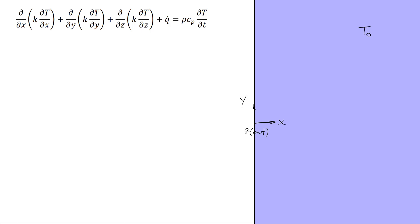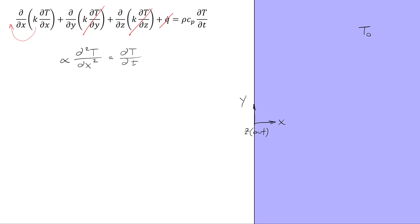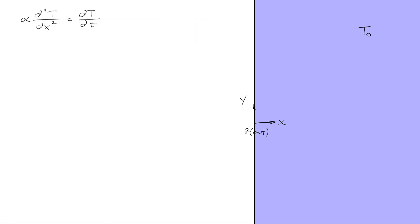Now let's simplify the heat diffusion equation. Because the solid runs infinitely far up and down and infinitely far into and out of the screen, we'll delete those two terms. In addition, the solid has no heat generation. However, because this is an inherently transient problem, we'll leave the term on the right-hand side. We'll also assume that the thermal conductivity k is not a function of temperature, so we'll pull that out of the first term, and then use the definition of thermal diffusivity alpha, which is equal to k over rho cp. This gives us alpha times the second derivative of temperature with respect to x equals the partial derivative of temperature with respect to time — our governing partial differential equation.